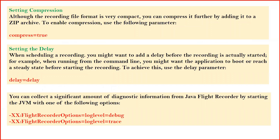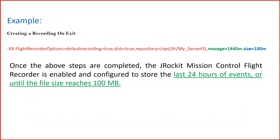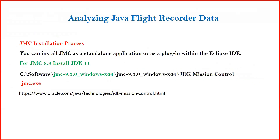You can also compress the JFR recording using the compress parameter, delay the start with a delay option, and enable debug and trace as well. In the example shown on screen, JFR recording is enabled so that when the server crashes or exits it saves the file to /opt/jfr/server01. maxage is set to 1440 minutes and size is 100MB. This means JRockit Mission Control Flight Recorder is configured to store the last 24 hours of events or until the flight file reaches 100MB, whichever condition is met first, and the JFR file is created on JVM exit.